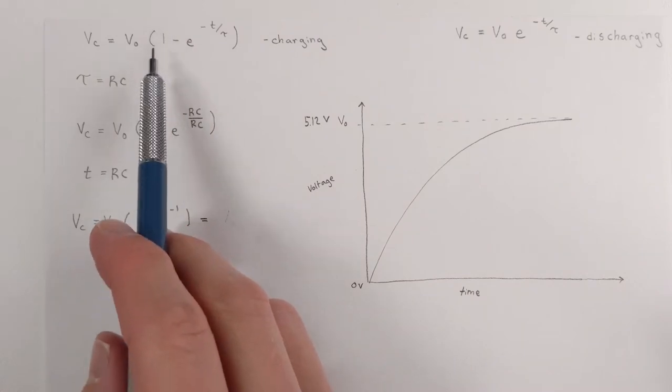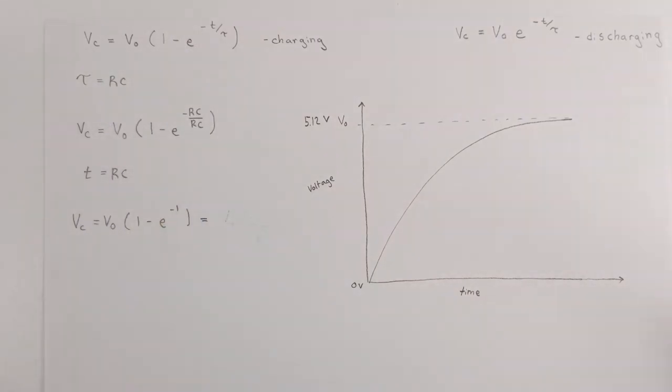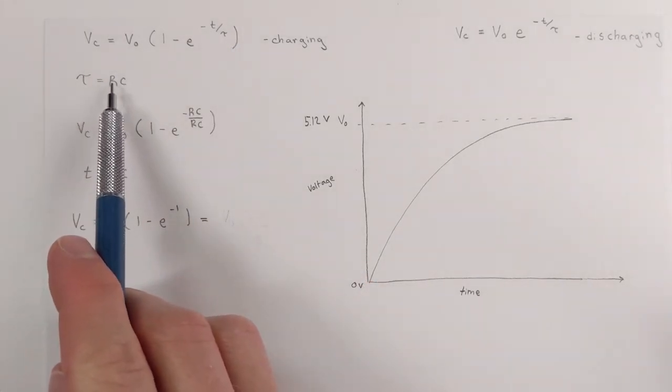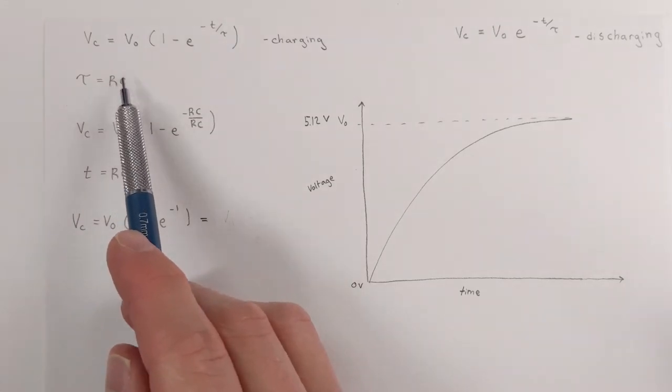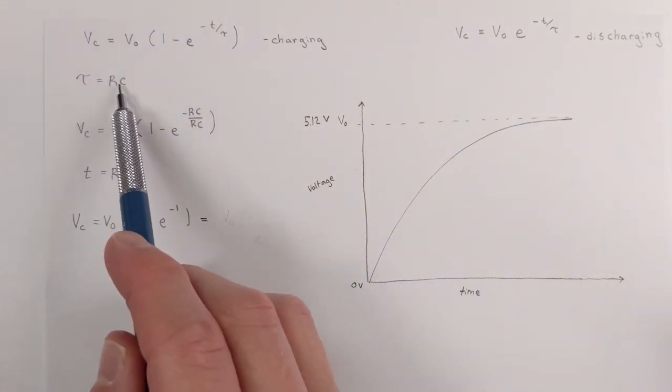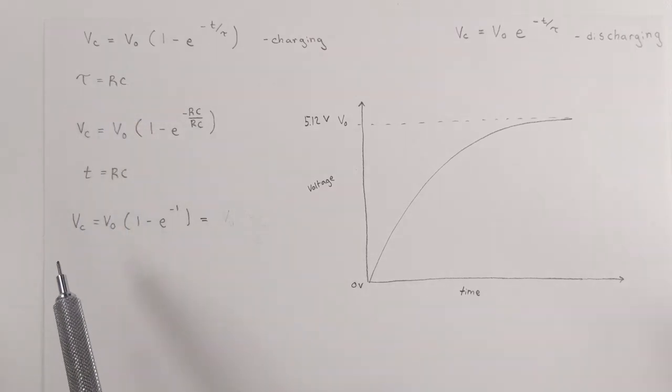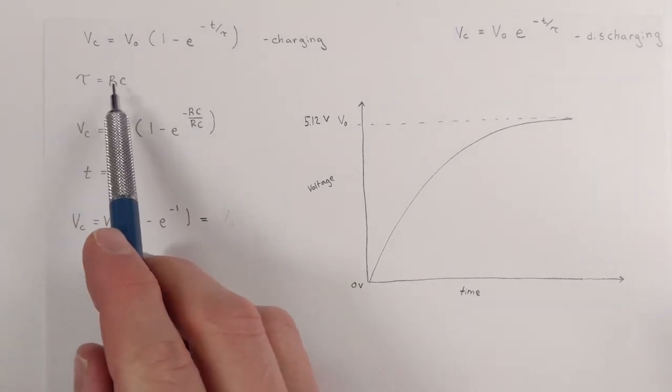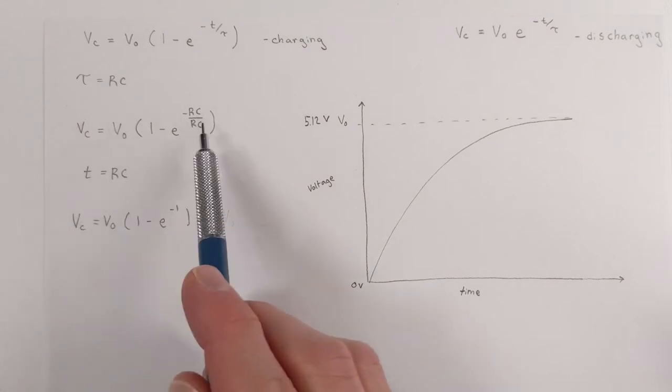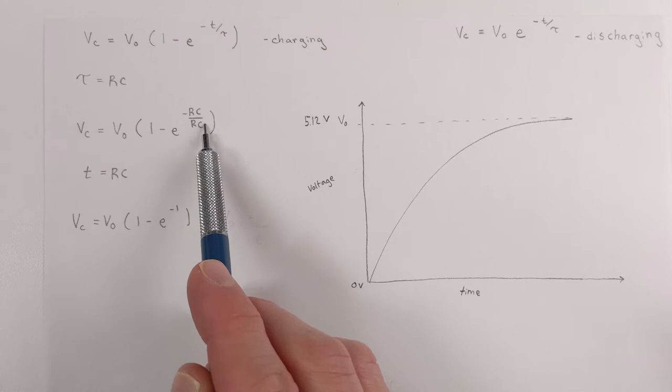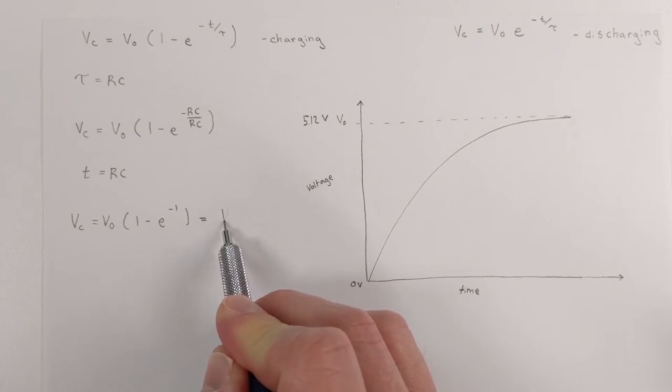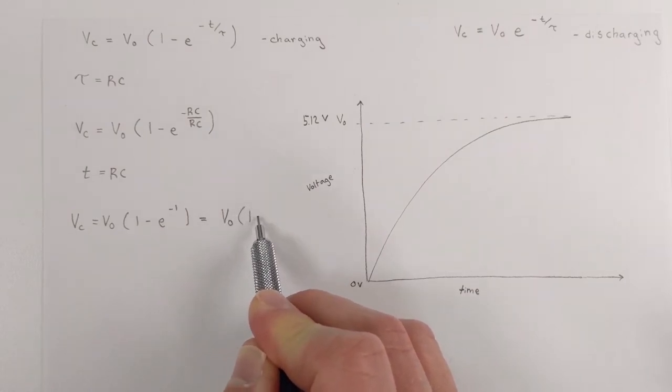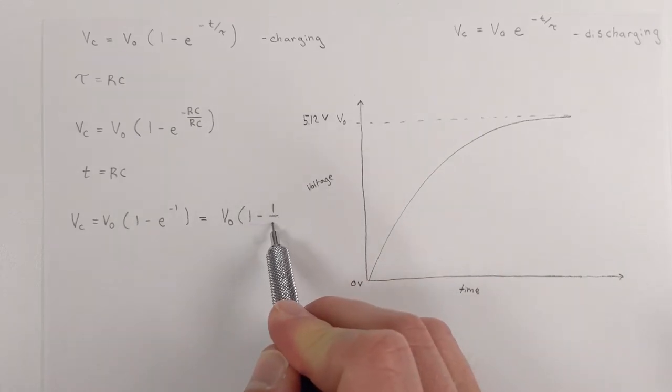Now, this is 1 minus E to the negative T over tau. Tau is the same thing as R times C or resistance times capacitance. So what we're going to do is we're going to set tau equal to RC. And what we end up getting is negative RC over RC, which is just negative 1.